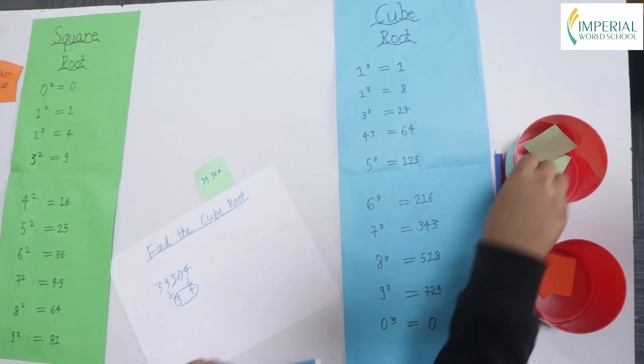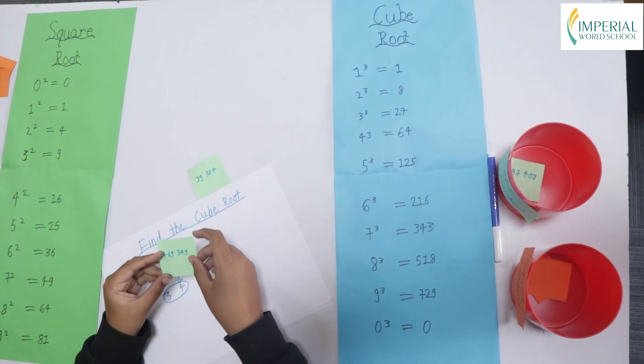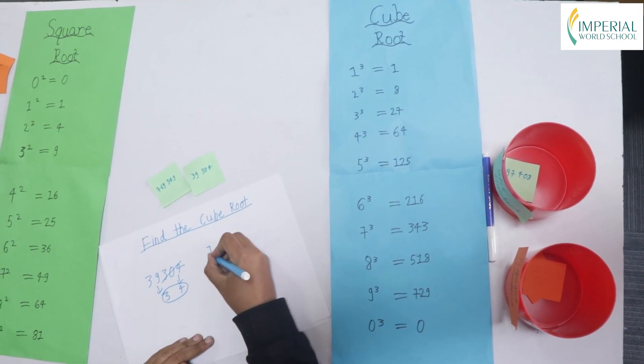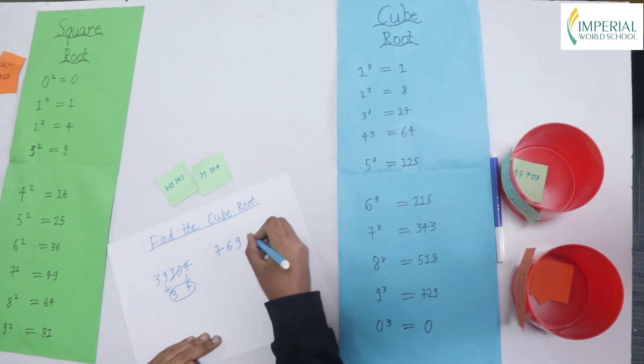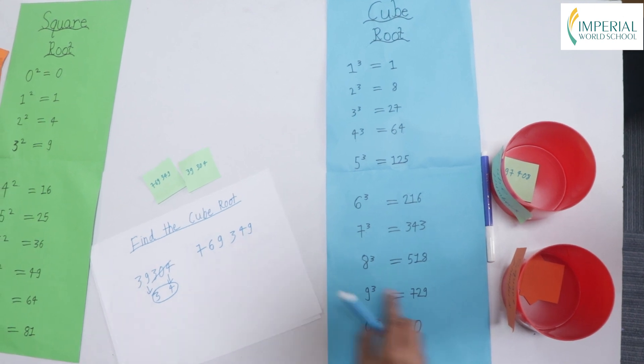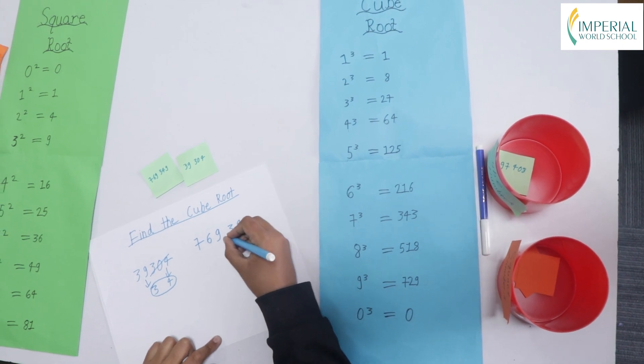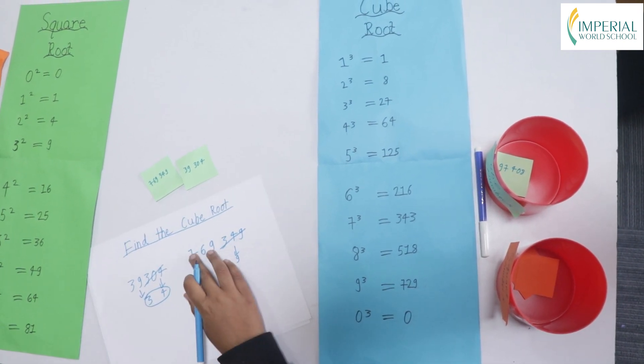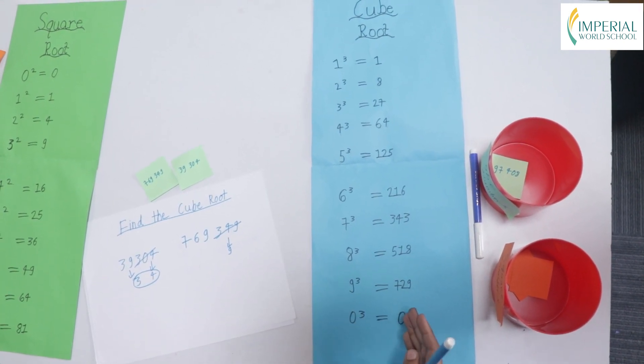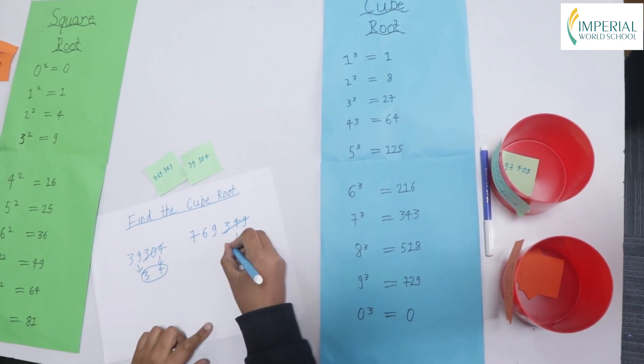So now let's take another number. So the next number is 769,349. Now to find this what is the closest to 9 over here. So it is 9 itself again. So we write 9 over here. And cut the last 3 digits. Now we are left with 769. So now which is the closest to 769 without exceeding it? Yes it is 9. So the answer will be 99 cube.